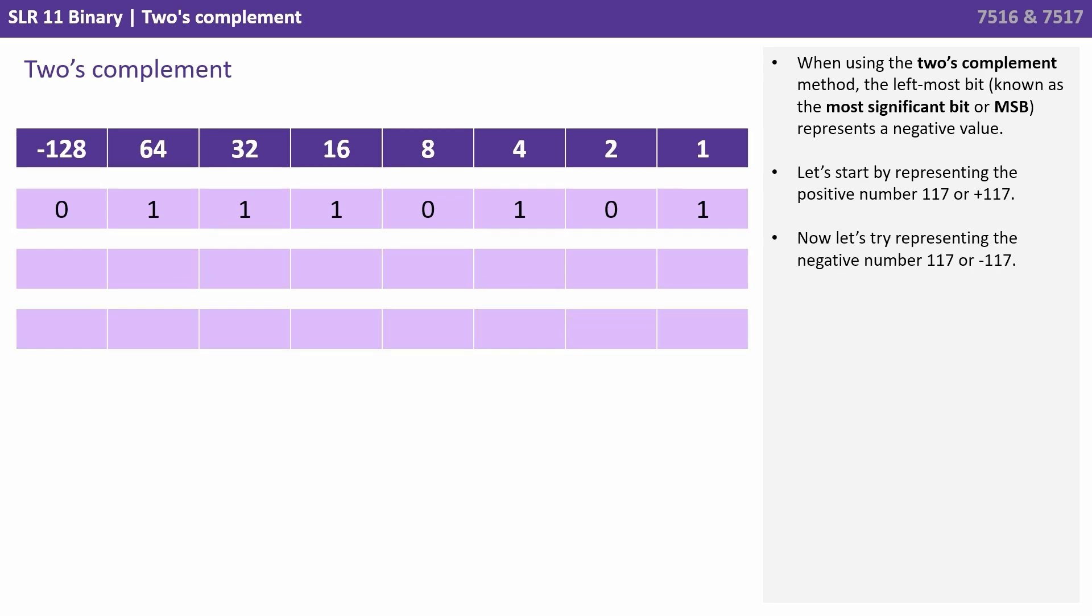Now let's try representing the negative number. So negative 117. Well it's a negative number so we must start with a one. Currently we've got the number minus 128 as we've got one in the column that has a weighting of minus 128.